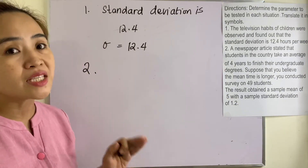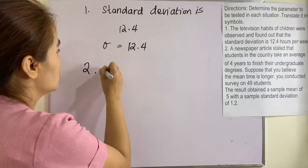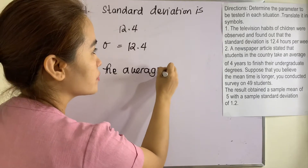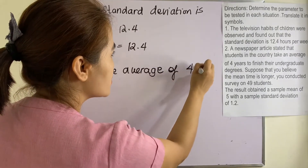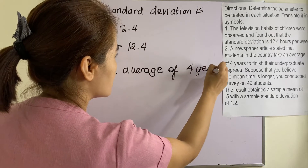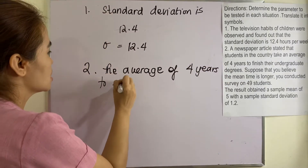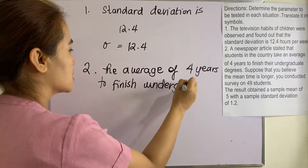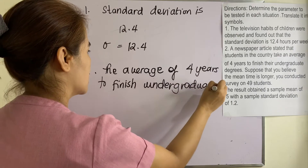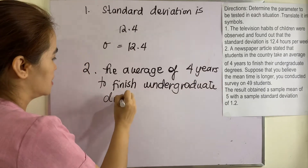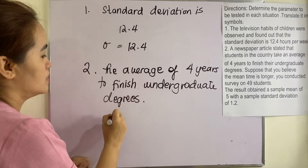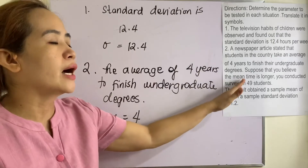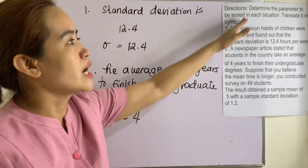We are after the average — the average number of years to finish undergraduate degrees. So the parameter is the mean, μ = 4. We are not after the statistic; we are after the population parameter.